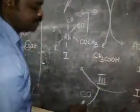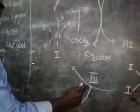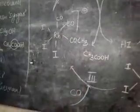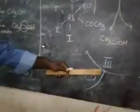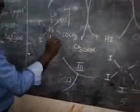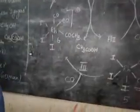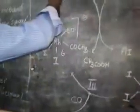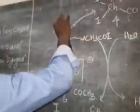The third step is the addition of one more carbonyl group — that is, a carbon monoxide is added. With this addition, the coordination number changes back to six.